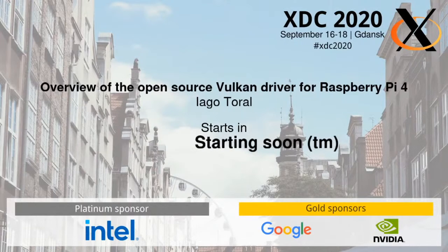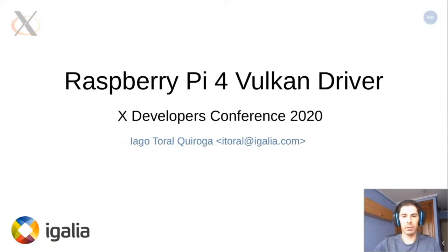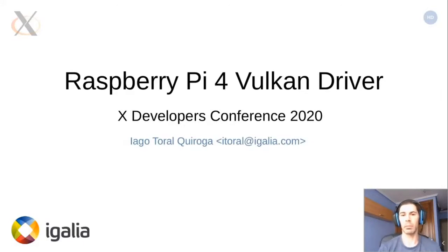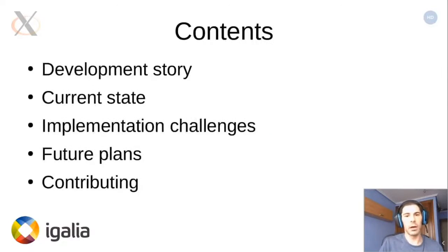This is an overview of the open source Vulkan driver for Raspberry Pi 4 by Diago Torral. My name is Diago Torral, I work as a software engineer for Egalia, and for a bit over a year I've been involved with the Raspberry Pi graphics stack — initially with the OpenGL stack, but more recently I've been working on bringing up Vulkan for the Raspberry Pi 4, which is what this presentation will cover.